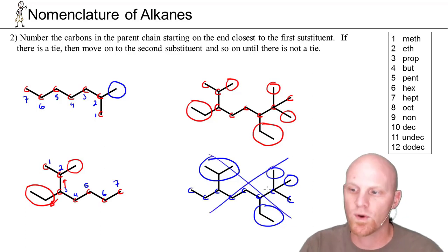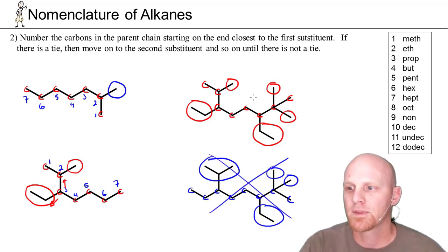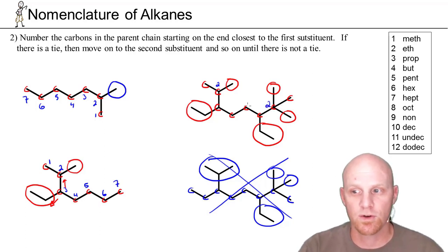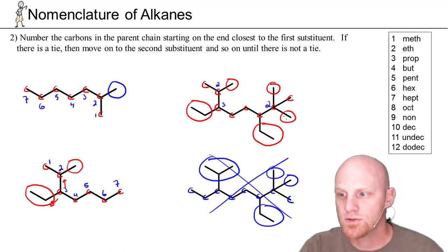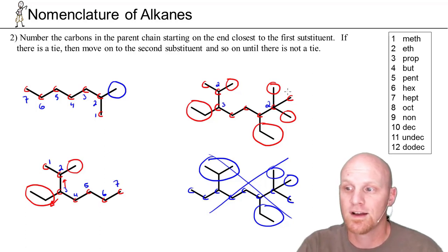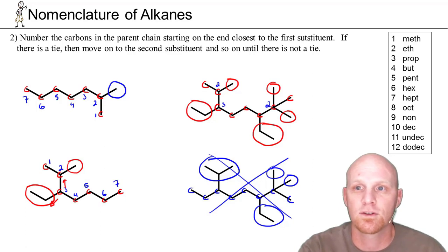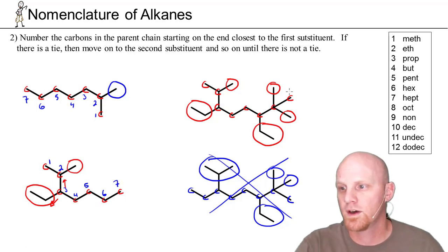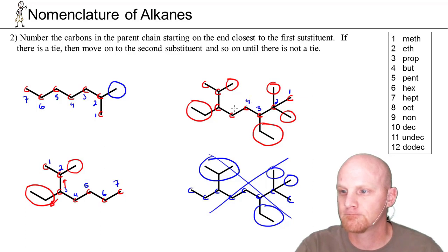For the correct parent chain from the previous slide, numbering either direction puts the first substituent at carbon two — so there's a tie. But going left to right puts the second substituent at carbon three, while going right to left also puts it at carbon two. Since the second substituent gets a lower number going right to left, that's the preferred direction. So we number the eight-carbon chain right to left.